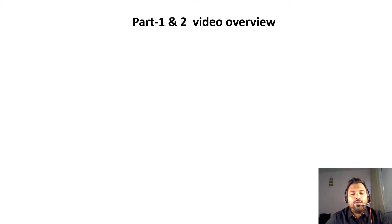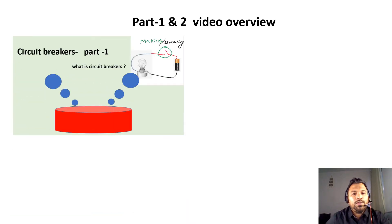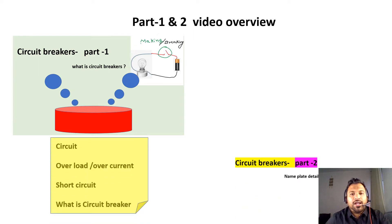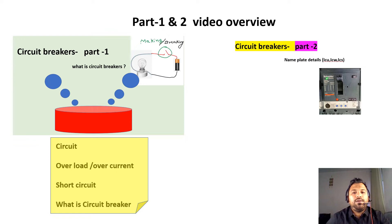Let's quickly recap the Part 1 and Part 2 videos. In Part 1, I explained the importance of circuit breakers and the reasons why circuit breakers are required in switchgear. In Part 2, I explained the nameplate details. Circuit breakers have two nameplate detail categories: first is current, and second is voltage.